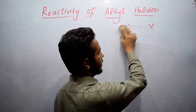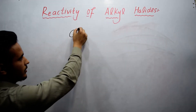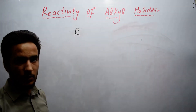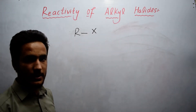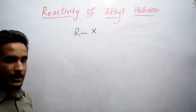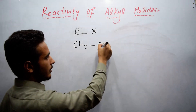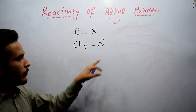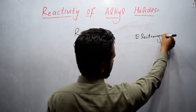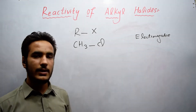Now we will move toward our topic: reactivity of alkyl halides. First, we look at the structure of alkyl halide, which is CH₃X, or simply R–X, where R represents the alkyl group — methyl, ethyl, propyl, etc. — and X is the halogen. For simplicity we take the first member, methyl CH₃, with chlorine or any halogen atom. We know that halogen atoms are more electronegative.